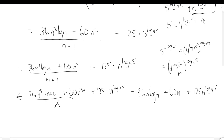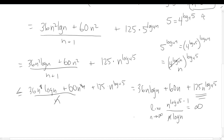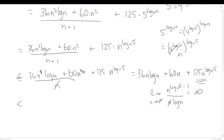Now we have three terms. We know n is less than n log n, so that's not dominant. The real question is the relationship between n^(log₄5) and n log n. Taking the limit, we can cancel an n from top and bottom. Since log₄5 > 1, subtracting 1 still leaves a positive exponent, giving us a polynomial over a logarithm, which goes to infinity. So n^(log₄5) is the dominant term.